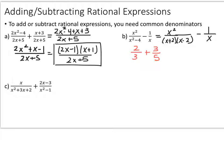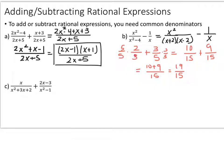This is very similar to 2 thirds plus 3 fifths. There's nothing you can multiply 3 by to get 5 or 5 by to get 3, so the lowest common denominator is just the two numbers multiplied together — 3 times 5 — giving a common denominator of 15. The 3 needs a 5, so the 2 gets a 5 as well and becomes 10 over 15. The 5 needs a 3, so its numerator also gets a 3 and becomes 9 over 15. The answer is 10 plus 9 over 15, or 19 over 15.